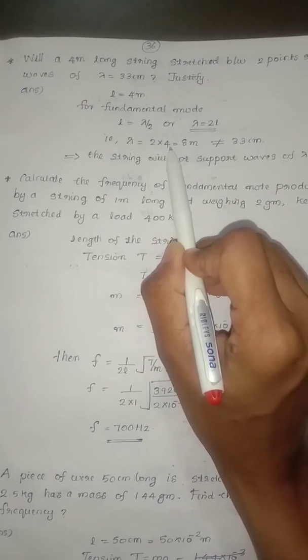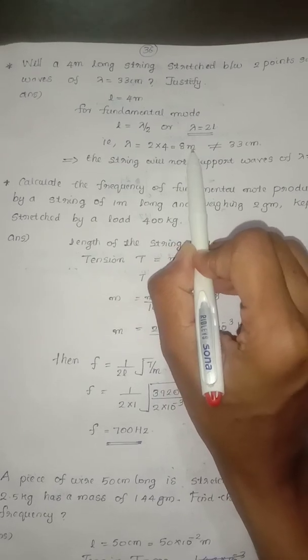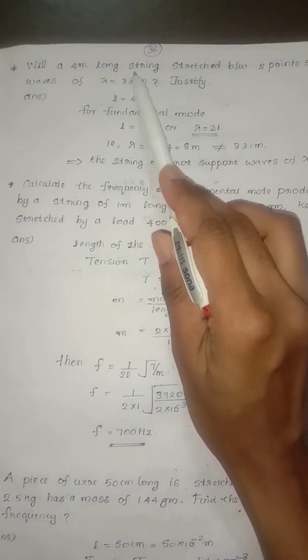So here L = 4m, then lambda is equal to double. 2 × 4 = 8m. Then it is equal to 33cm.